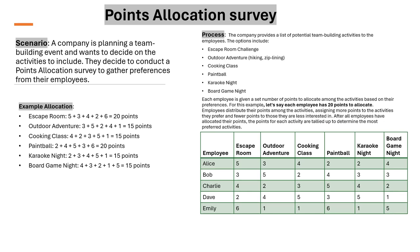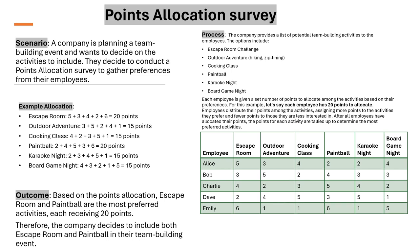Employees distribute their points among the activities, assigning more points to the activities they prefer and fewer points to those they are less interested in. After all employees have allocated their points, the points for each activity are tallied to determine the most preferred activities. Based on the point allocation, escape room and paintball are the most preferred activities, each receiving 20 points. Therefore, the company decides to include both escape room and paintball in their team building event.